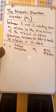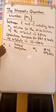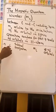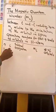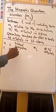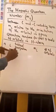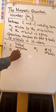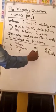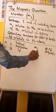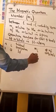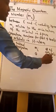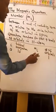When N is equal to 1, L is equal to 0. This is the S orbital. ML in this case is 0. Number of orbitals: 1.